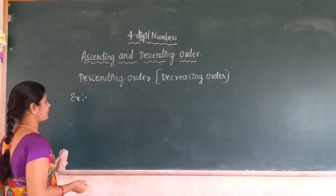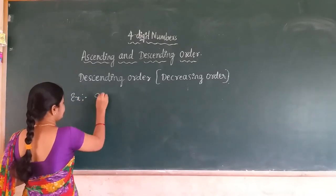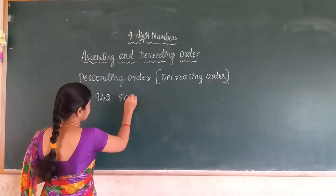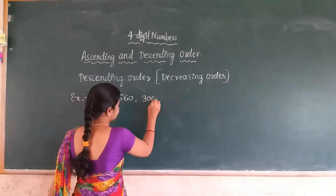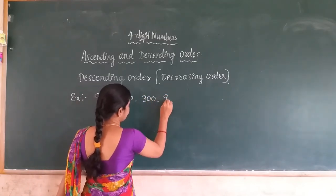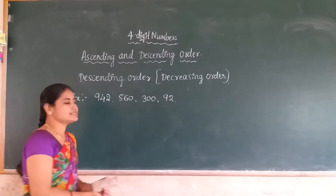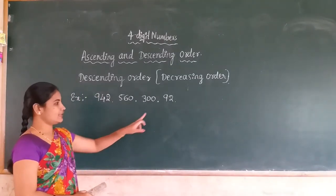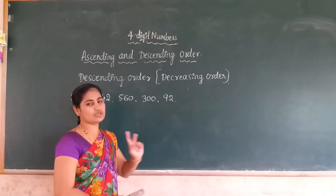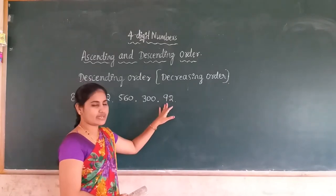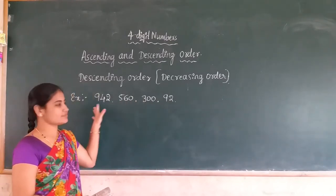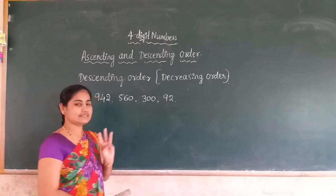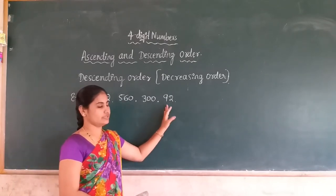For example: 942, 560, 300, and 92. In this arrangement, 92 is the smallest one because it has only 2 digits, which is very small compared to the remaining numbers that have 3 digits. That is why 92 is the smallest one.